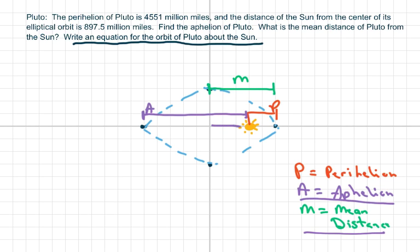So they're giving you the focus. In this case, I'm going to write my C, the distance to the C is going to be 897.5 million miles. So I'm just going to write that as times 10 to the 6th. And we're going to have to find our A or B. So we'll find our A.